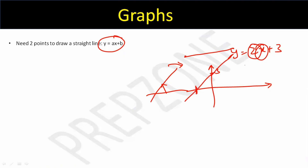If you need to find the x-intercept, set y = 0, so x must be −3/2. With those two points you can plot the graph. That's it.